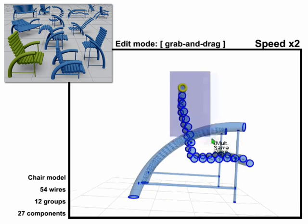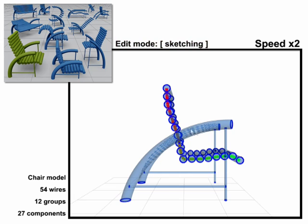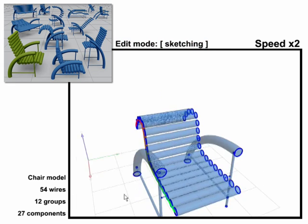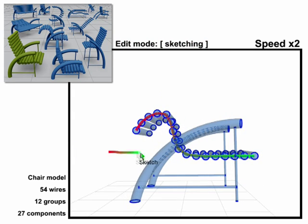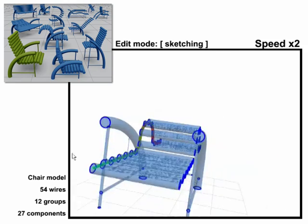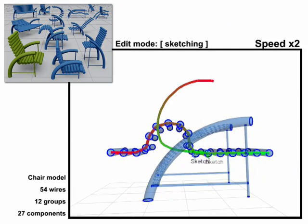We also support a sketch-based interface where the user can draw guiding strokes to affect a significant portion of the model at once. The strokes influence the spatial arrangement of a set of wires and then the edit operation is propagated to the rest of the model.